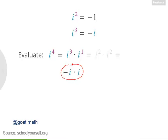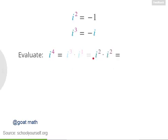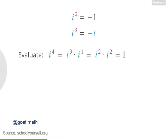What's negative i times i? We have a minus sign, and i times i is negative 1. So the answer is negative negative 1, which is positive 1. Let's double check that by evaluating i squared times i squared. i squared equals negative 1, and negative 1 times negative 1 gives us the same correct answer, positive 1. So that's i squared, i cubed, and i to the fourth.